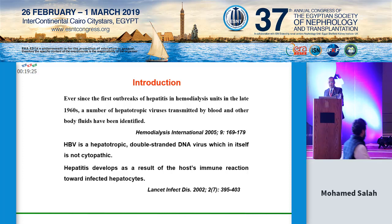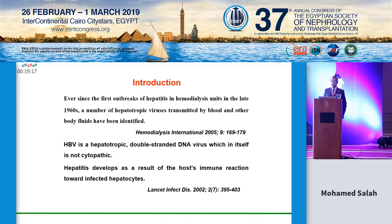Ever since the first outbreak of hepatitis in hemodialysis units in the late 1960s, a number of hepatotropic viruses transmitted by blood and other body fluids have been identified. Hepatitis B virus is a hepatotropic, double-stranded DNA virus which in itself is not cytopathic. Hepatitis develops as a result of the host's immune reaction towards infected hepatocytes.